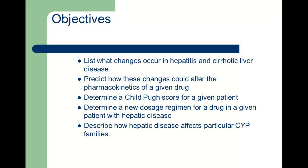You should also be able to list what changes would occur in cirrhotic liver disease, predict how these changes would alter pharmacokinetics, determine a Child-Pugh score, determine a new dosing regimen for a drug in a given patient with hepatic disease, and describe how hepatic diseases would affect particular CYP families.